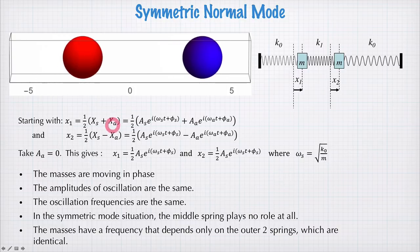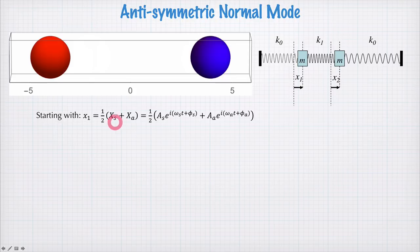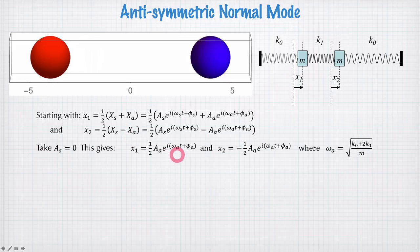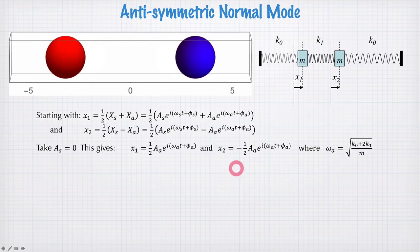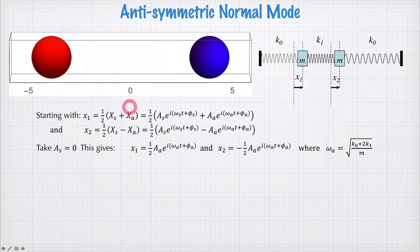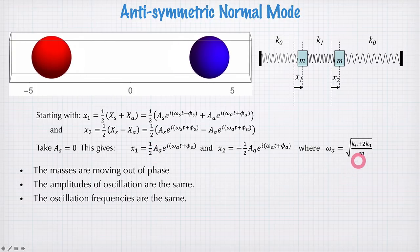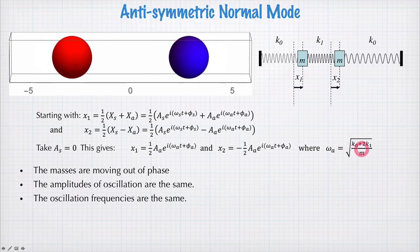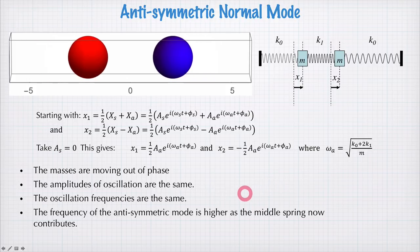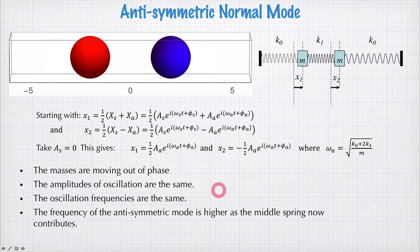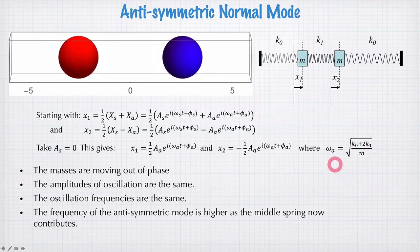What about Xa? Starting again with the same functions for x1 and x2, we'll find initial conditions such that As is equal to zero this time. Then x1 and x2 are given by plus and minus half of Xa respectively — a mode with the same frequency and same phase, but now the amplitudes are equal and opposite. The masses are oscillating in antiphase, 180 degrees out of phase, with the same amplitude of half Aa. The oscillation frequency is omega_a, which is a little higher than omega_s because of the plus 2k1 term. The frequency of the antisymmetric mode is higher because the middle spring is now active — it's adding spring constant to the situation, making omega_a, the antisymmetric frequency, higher than omega_s, the symmetric frequency.